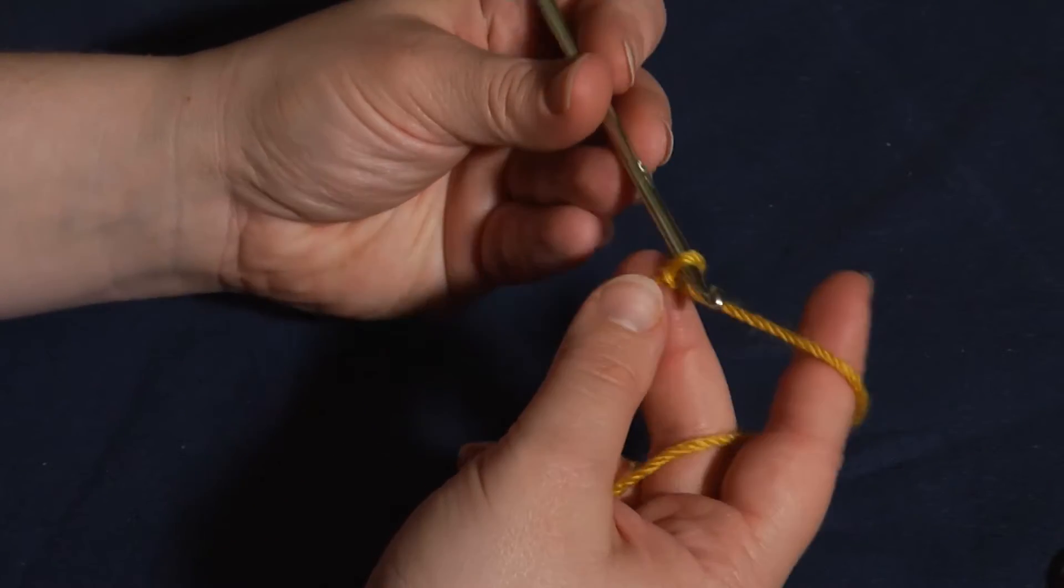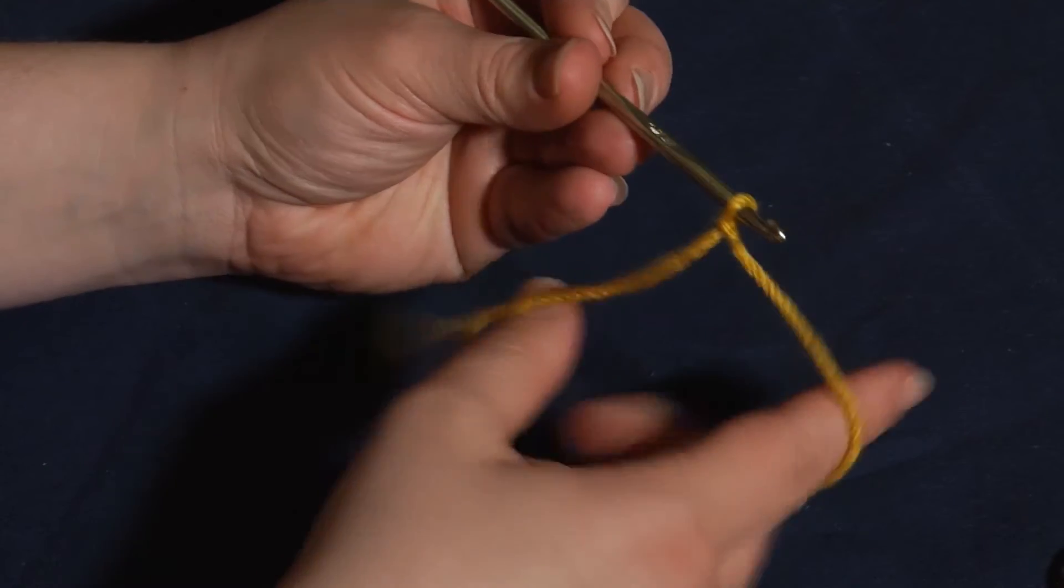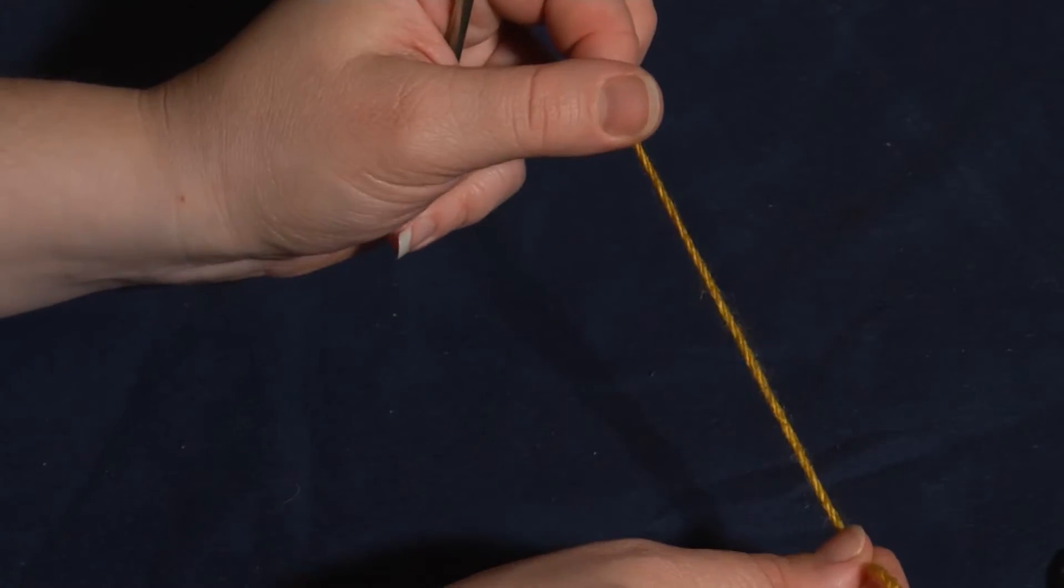The slipknot, you see, is how you make that very first loop that goes on the hook. Now, let me show you how it's done.